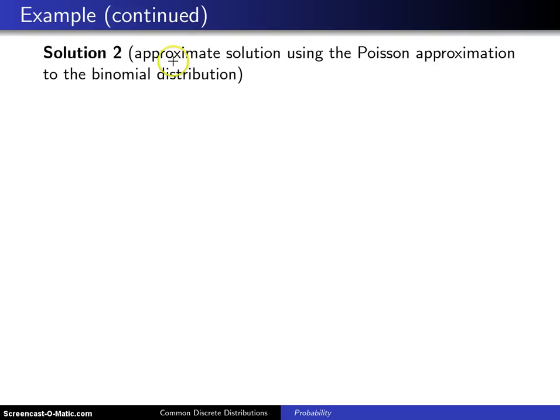So here is solution two. This will be approximate using the Poisson approximation to the binomial distribution. Once again, X will represent the number of people in the city of half a million people that are infected with the disease.